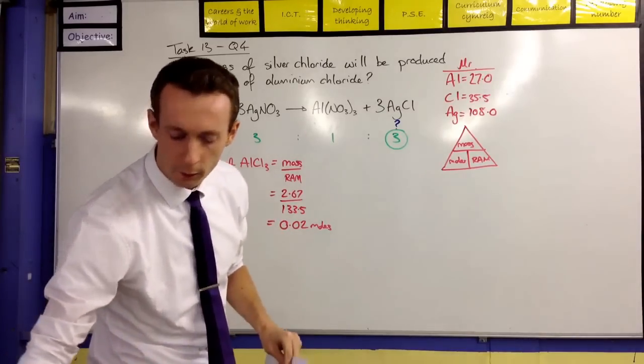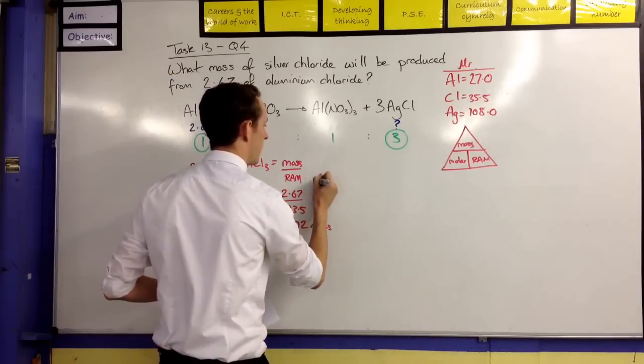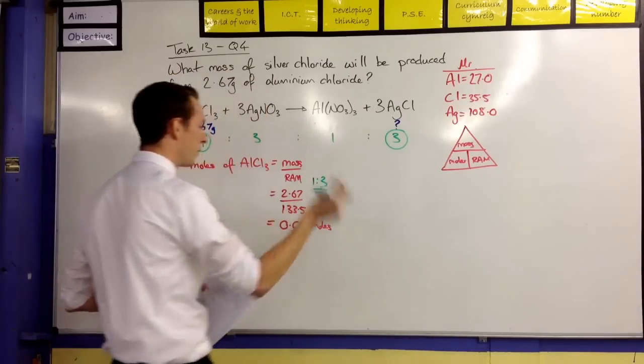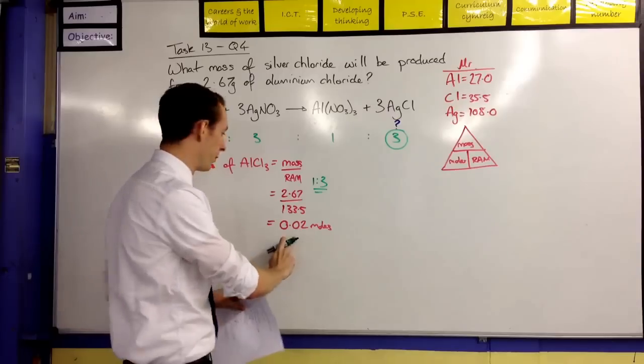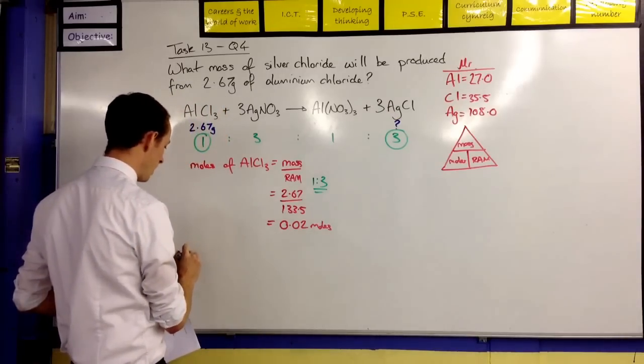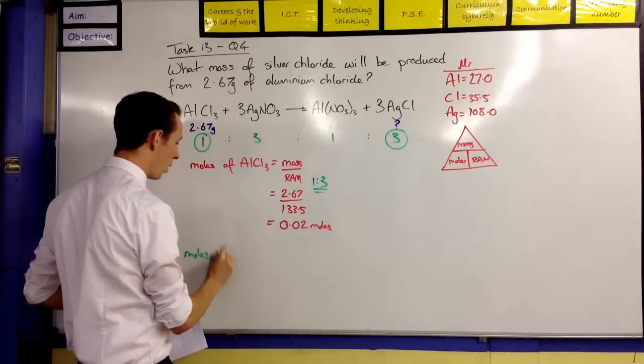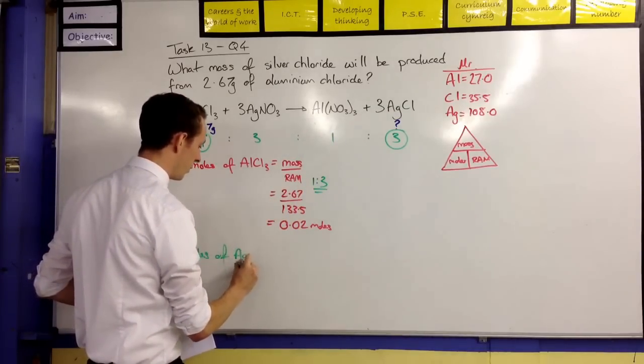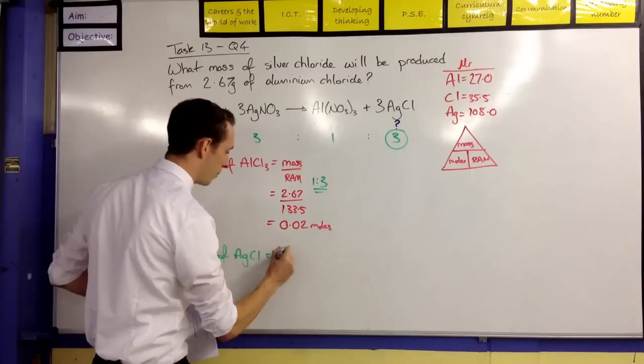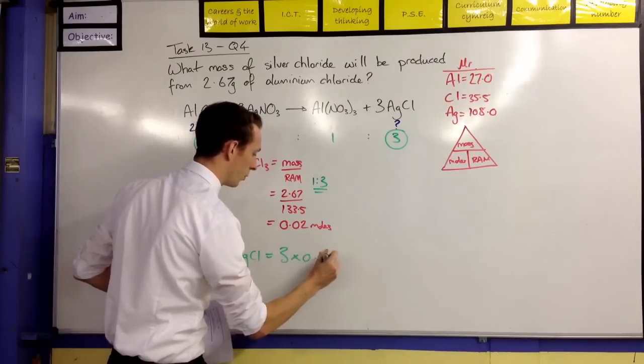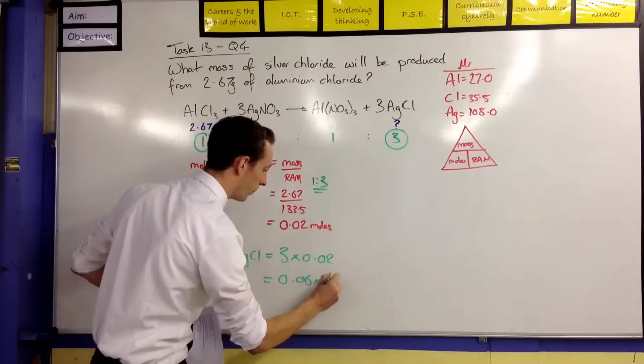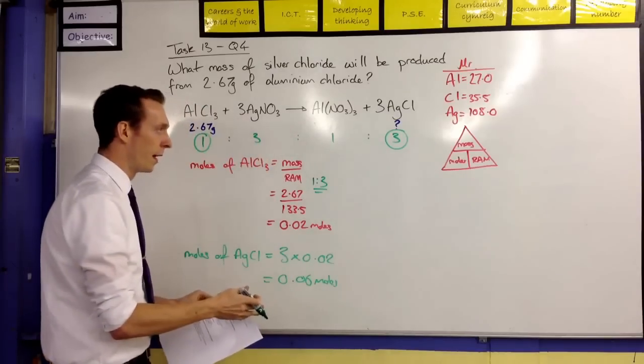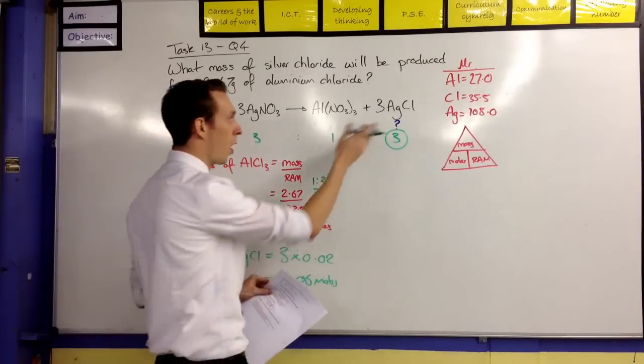Now, this is where our molar ratio comes back in. And we said it's in a ratio of 1 to 3. So that means that if I've got 0.02 moles of aluminium chloride, then the moles of silver chloride is going to be 3 times 0.02, which is obviously going to be 0.06 moles.